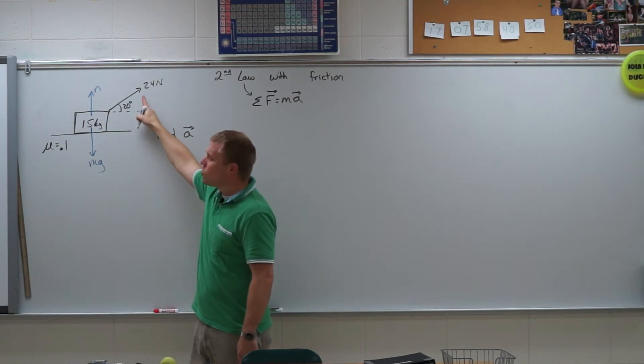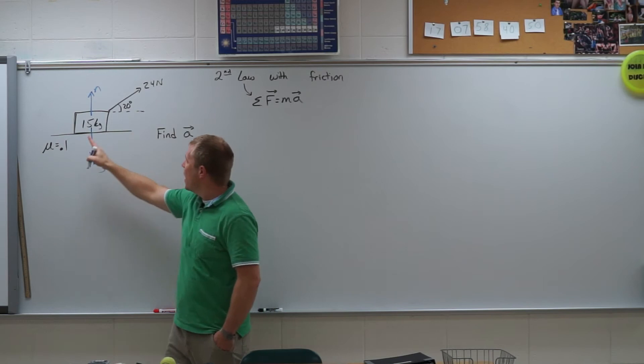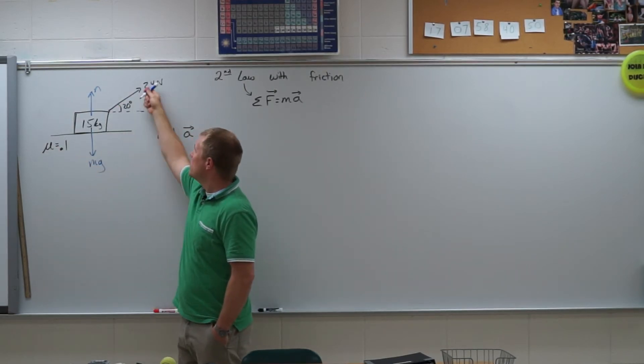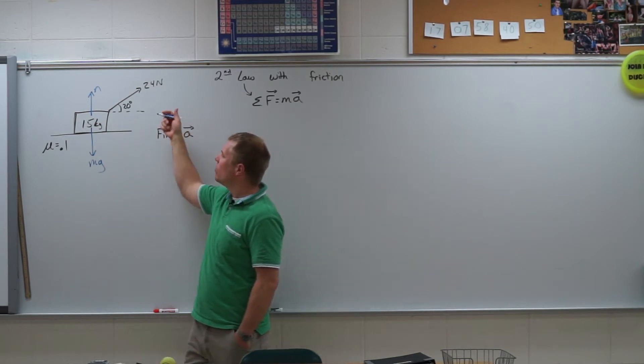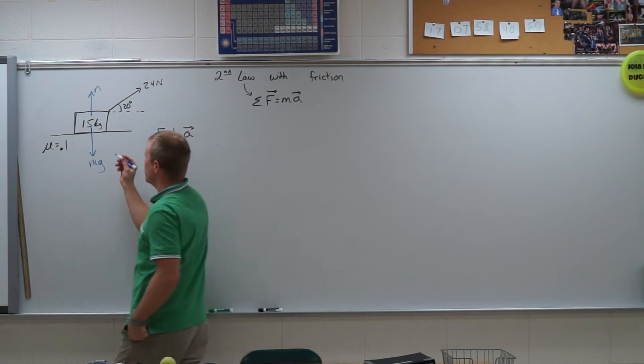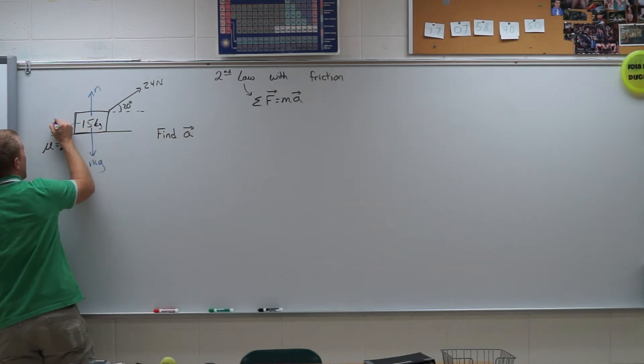And then there is this 24 newtons, and then there's also going to be friction in this case. Now we can assume that this 24 newtons is going to pull it this way, so friction is going to resist that sliding motion. And so we're going to have friction acting this way.